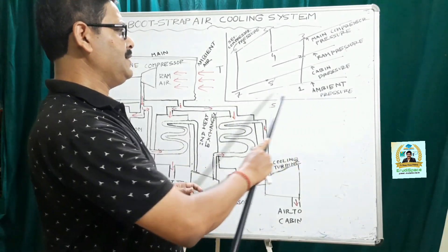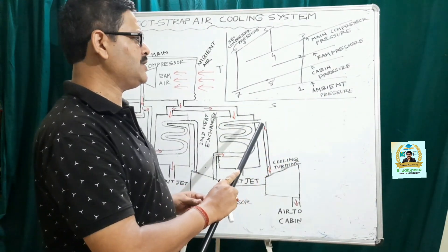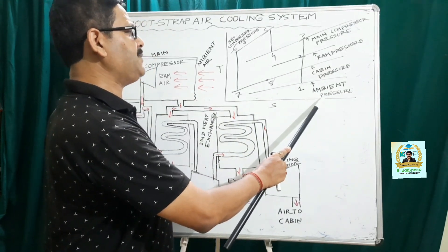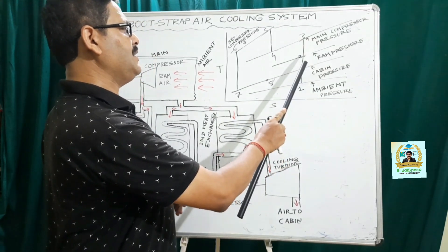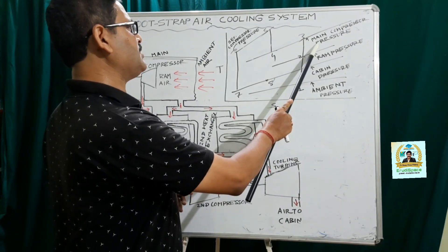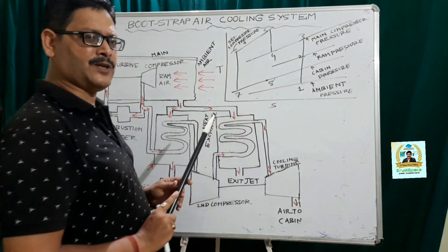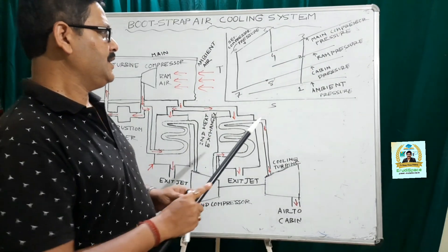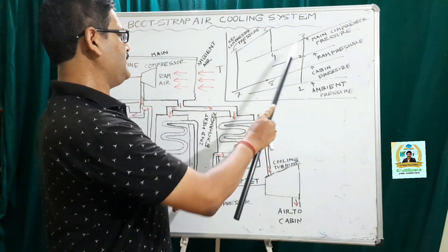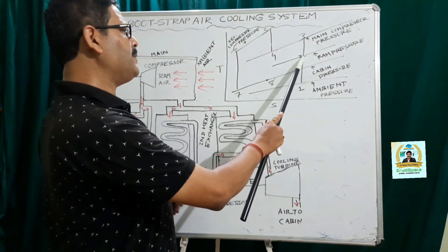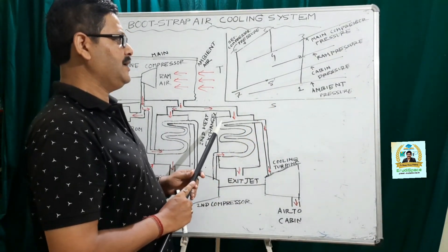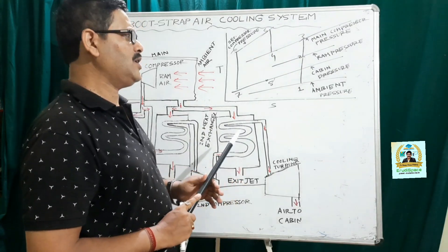So we have five pressure conditions: ambient pressure, cabin pressure, ram pressure, main compressor pressure, and second compressor pressure. Process 1-2 actually represents the ram compression that is taking place in the diffuser. In the ram compression, no work is done upon the system and the compression is due to the shape of the diffuser. Then it is taken to the main compressor where it is compressed from 2 to 3.